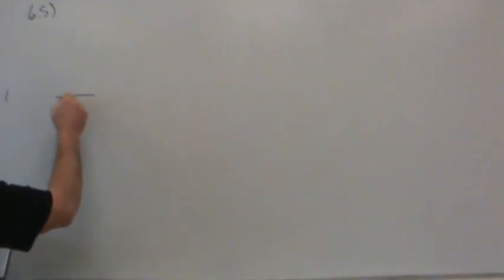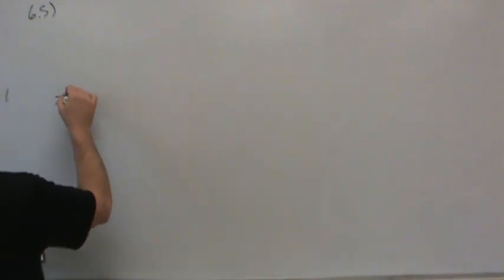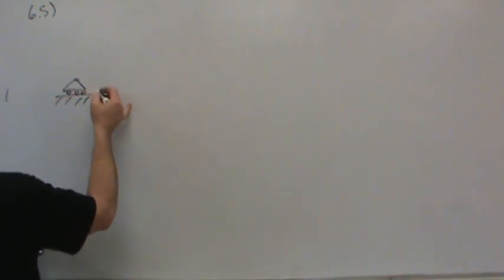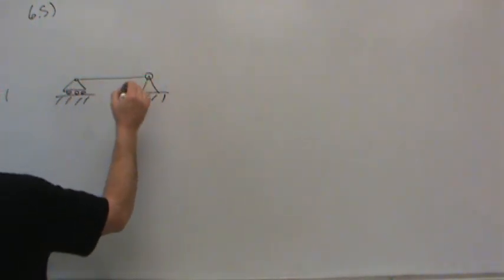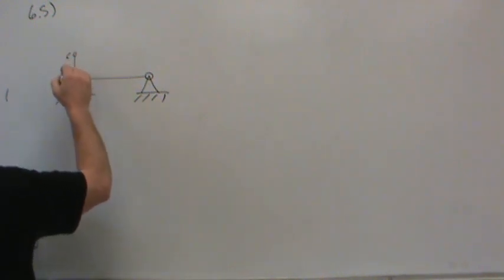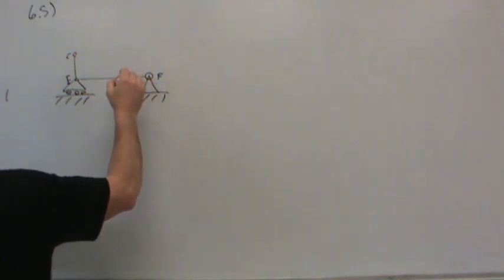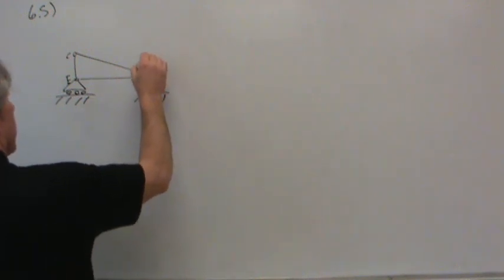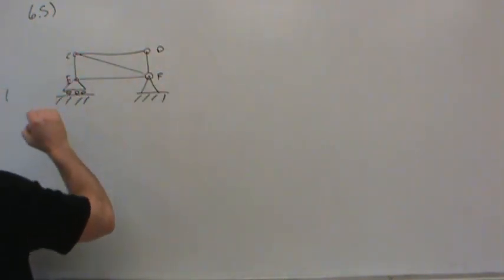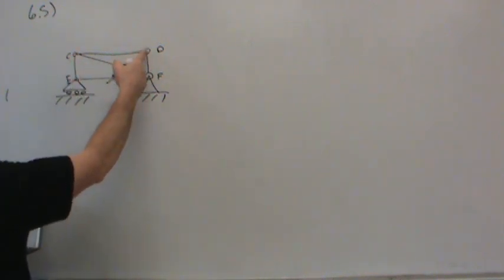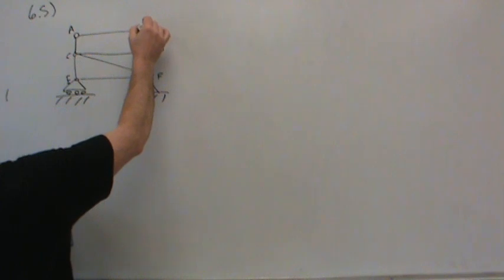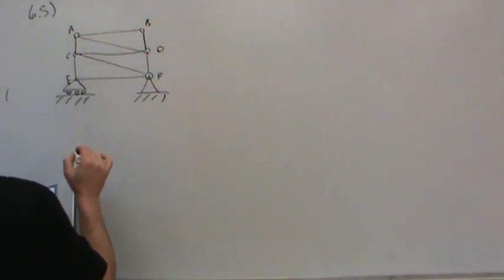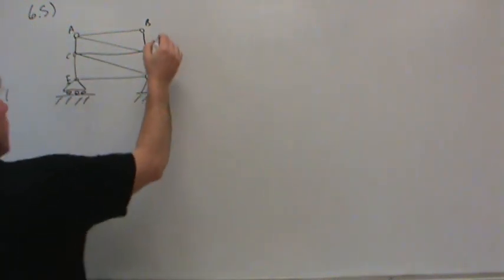Let's see how many members we have in this truss and sketch it. We have a member across there, one goes up to point C, this is point E down here, this is point F. There's a member from C to F, then continuing up to D and over back to C. CD and CF only connect at C. Then up to A, over to B, and a rigid bar from A to D.